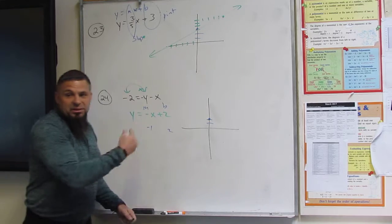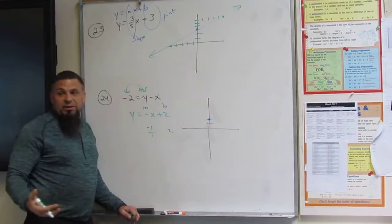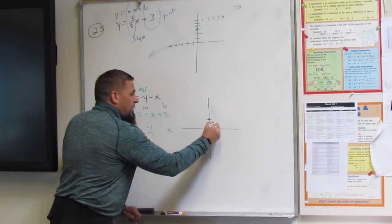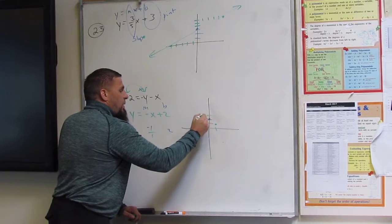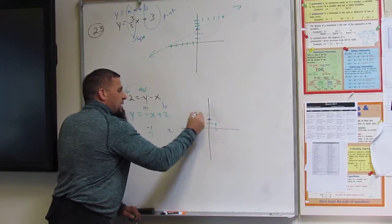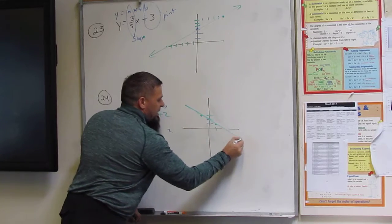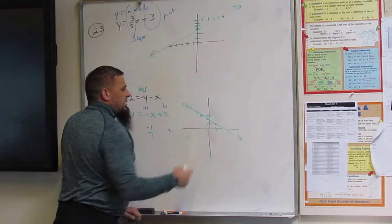Now that doesn't have a rise and a run, right? So what I do is give it a rise and a run. So now what it means is down one, right one. Or up one, left one. Either way, it's a good line.